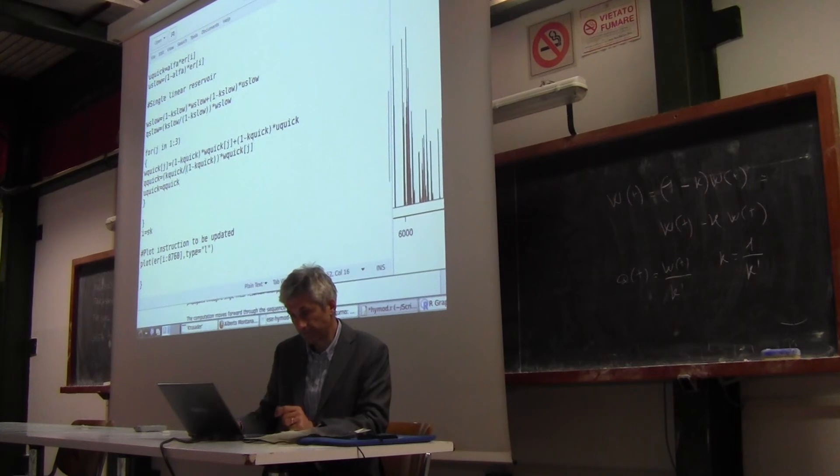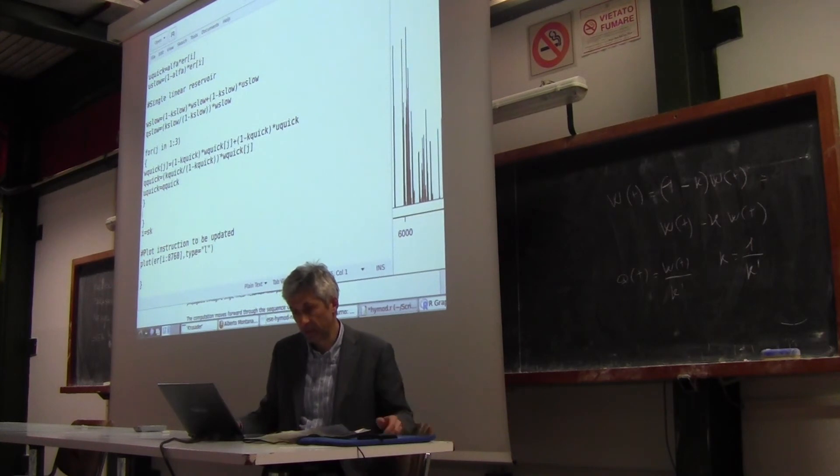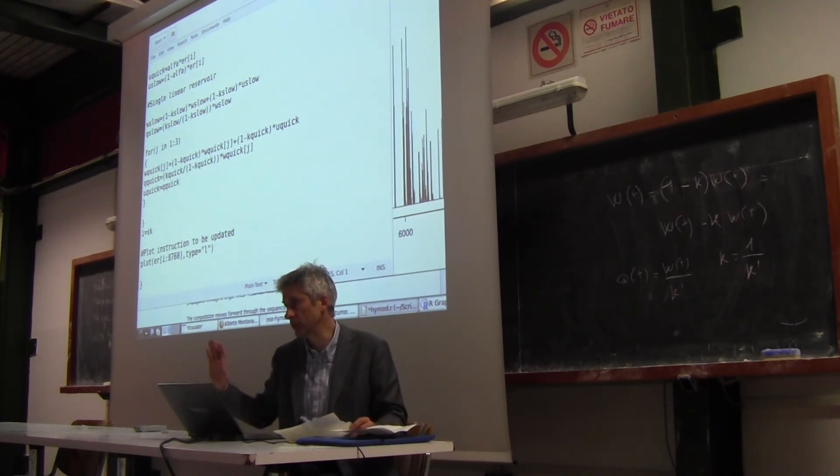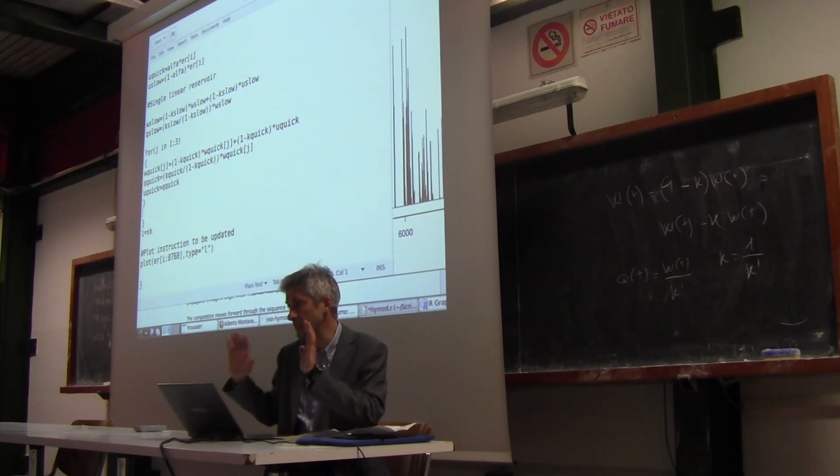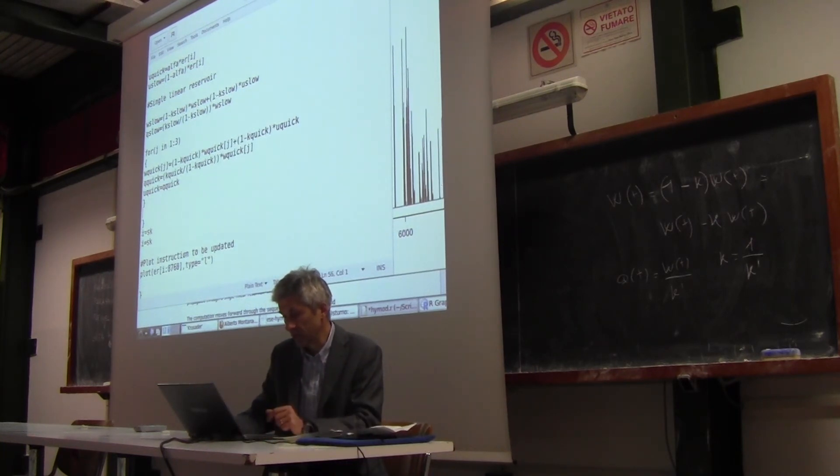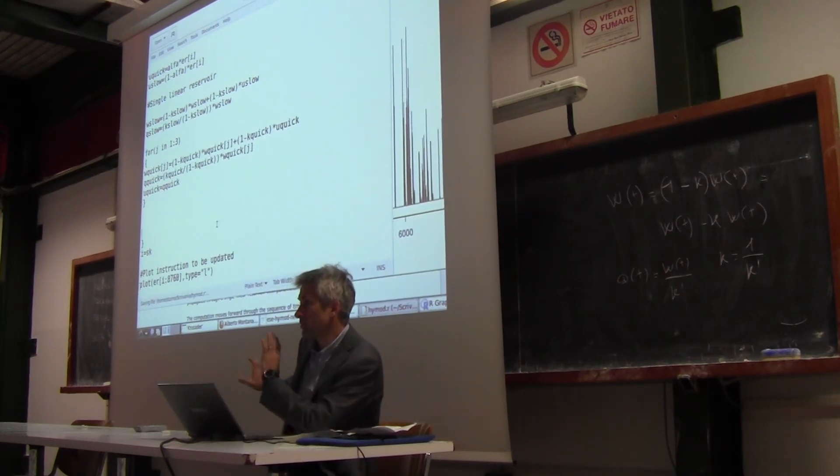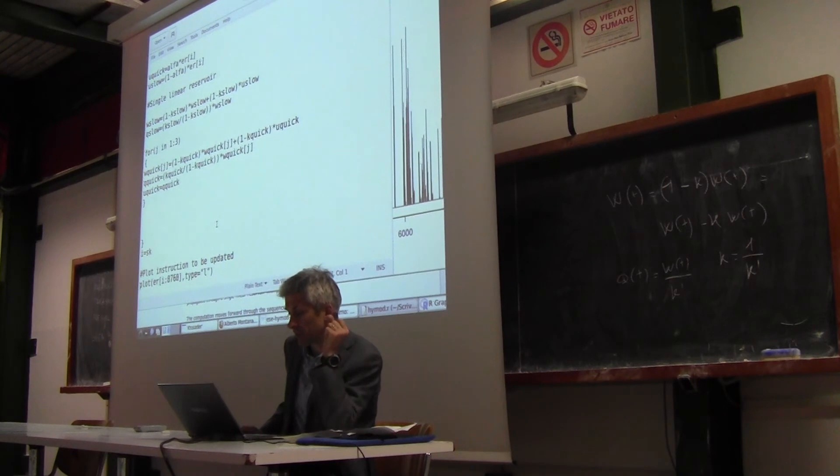This is where we are. Basically, we computed Q slow and Q quick, and therefore we just needed this stage to sum them up in order to get the results. So we are almost done. In fact, if you look at the program on my website, you will see that we are almost done. I think we need to stop here because we are running out of time.